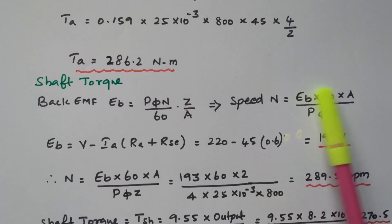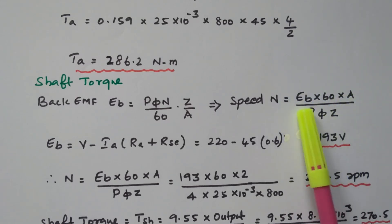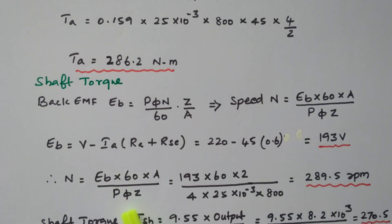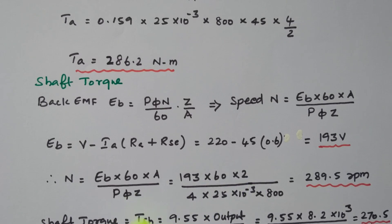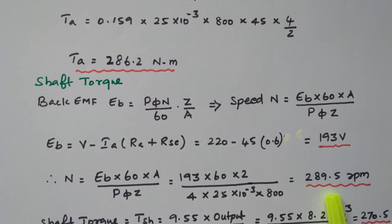Using the calculated back EMF, we can now find the speed of the motor. N equals E_B into 60 into A divided by P into phi into Z: that is 193 into 60 into 2, divided by 4 into 25 into 10 to the power minus 3 into 800. By simplifying, the speed is 289.5 RPM.